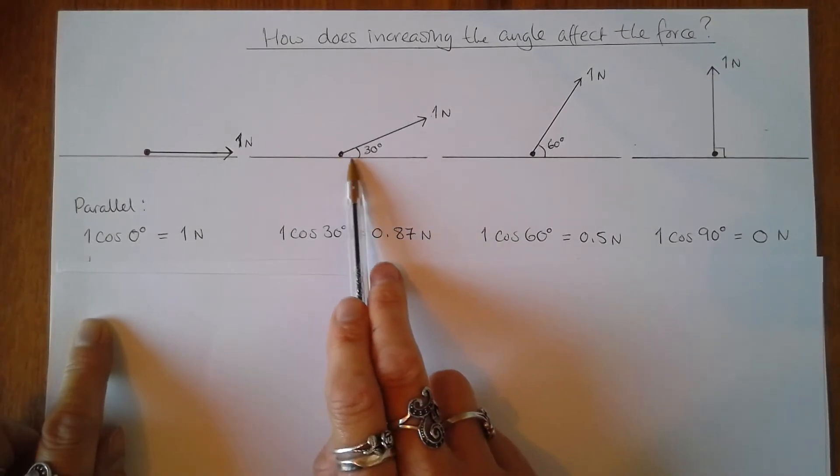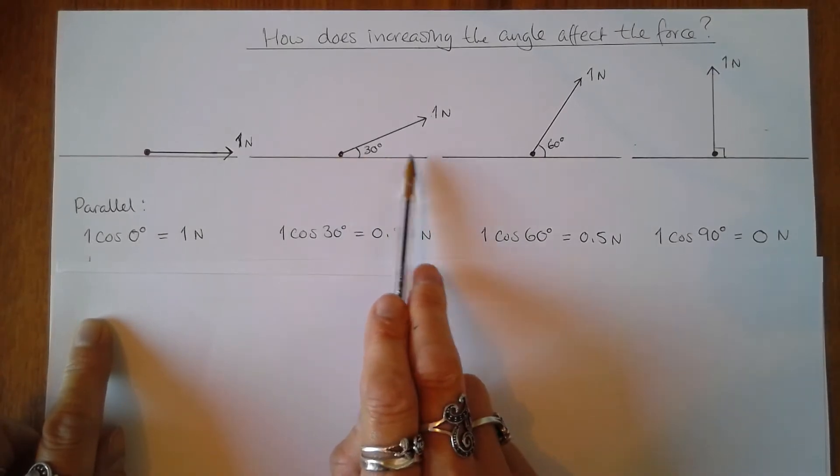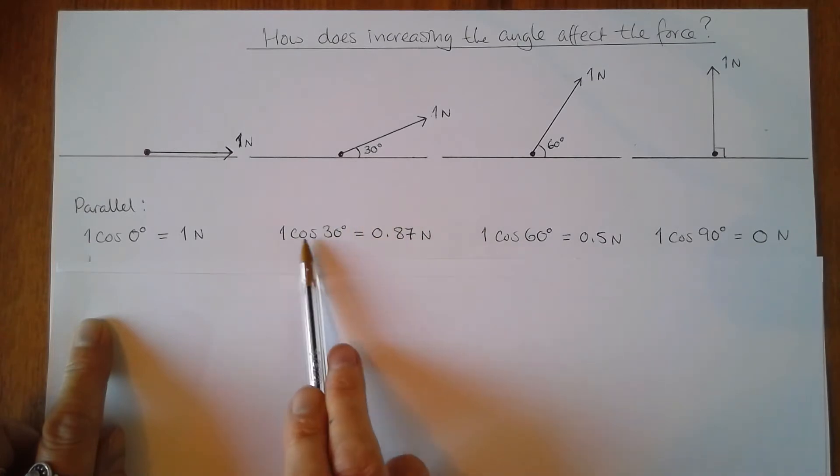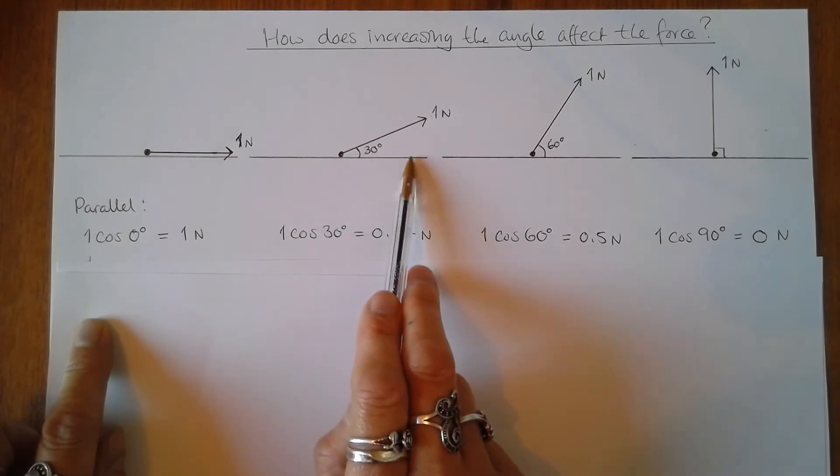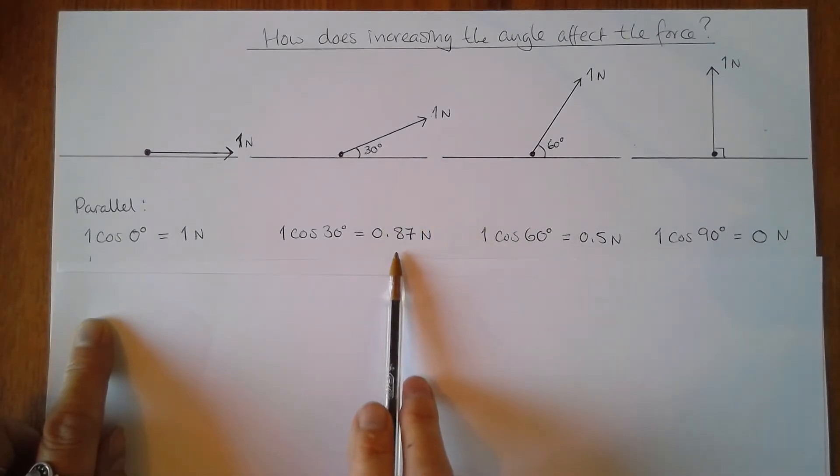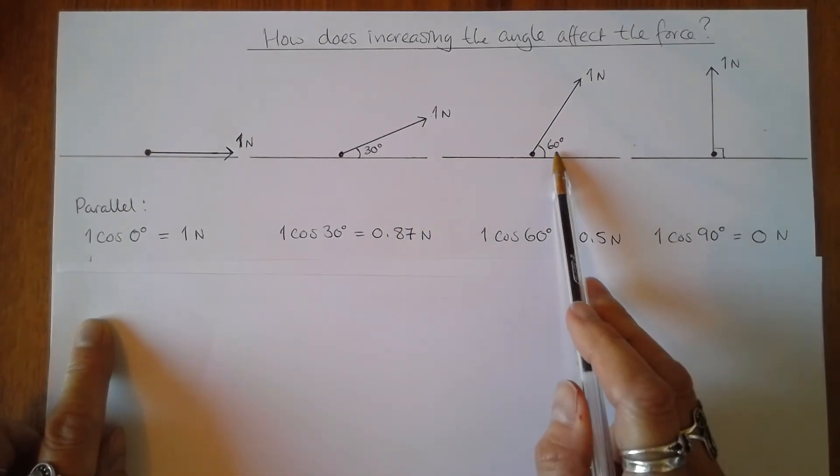If I increase the angle to 30 and look at the parallel component, the parallel component is one cos 30 which is equal to 0.87, and so that force of one newton is now reduced to 0.87 newtons. I increase the angle further to 60 degrees, one cos 60 is 0.5, so the force is now reduced to half a newton.